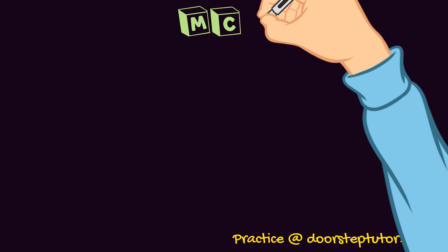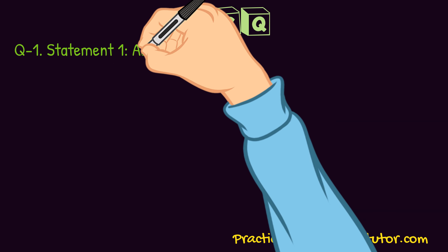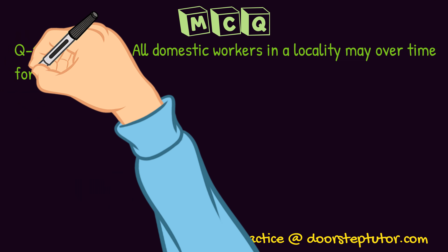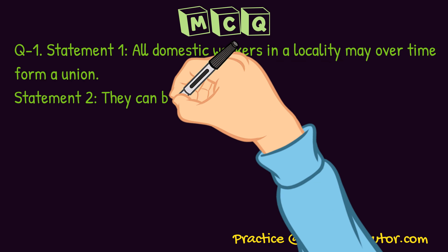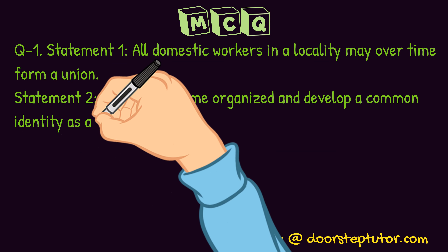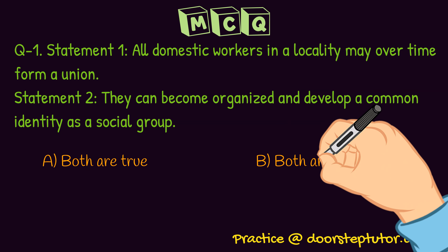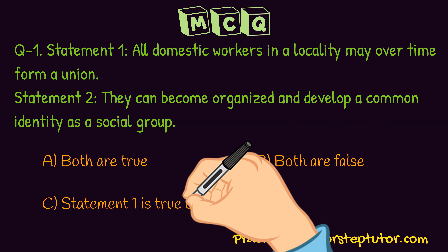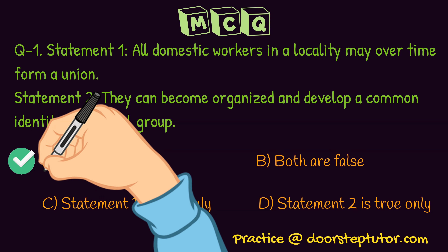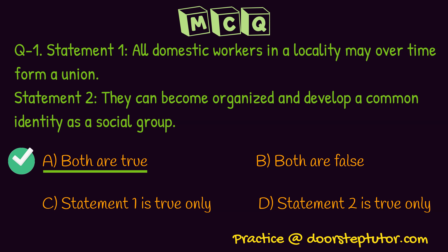Let us look at some questions. Statement 1: all domestic workers in a locality may over time form a union — this is correct. Statement 2: they can become an organized group, develop a common identity, and form a social group — this is also correct, because they fulfill two prerequisites of a social group: organization and common identity. So the answer is option 1 — both statements are true.